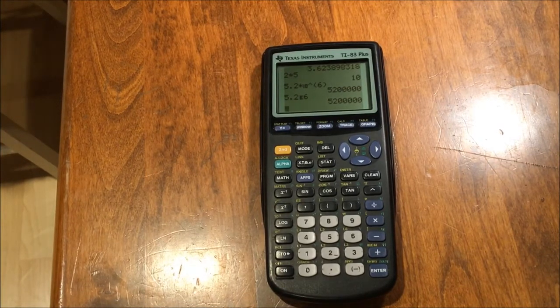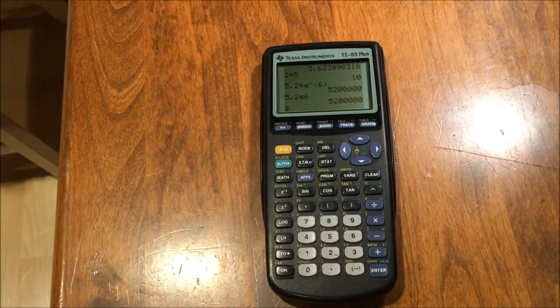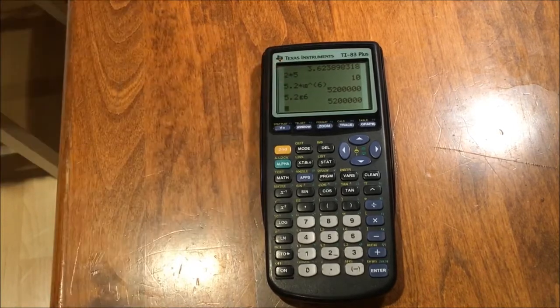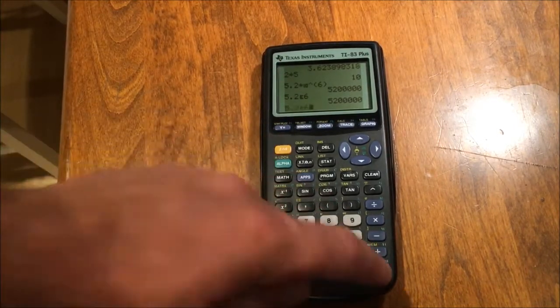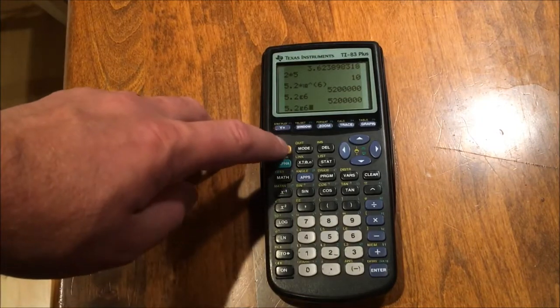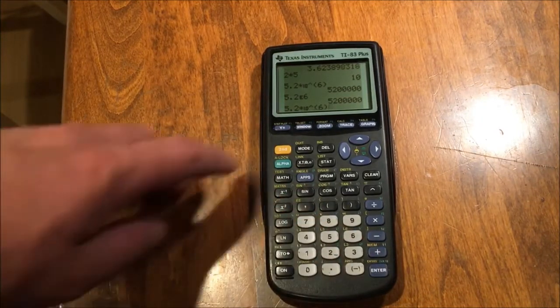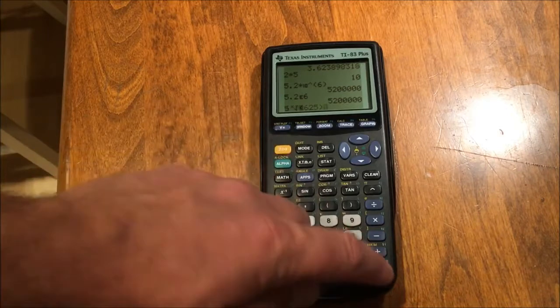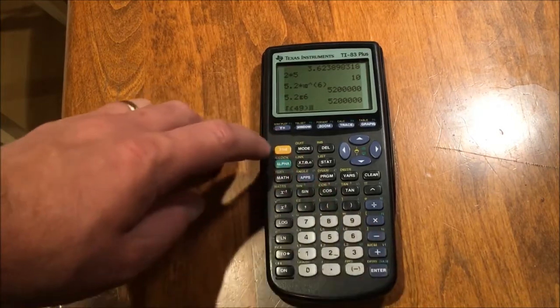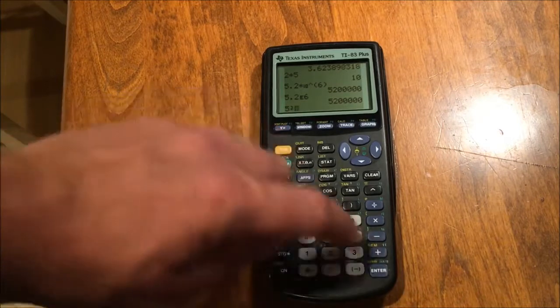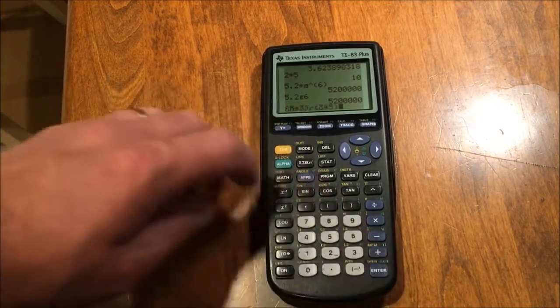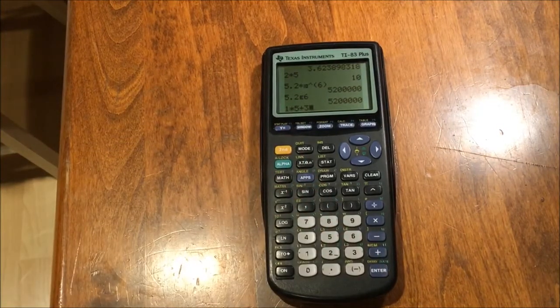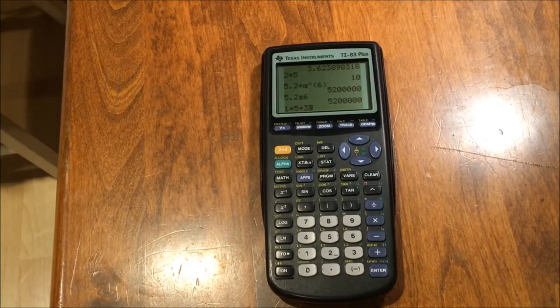I just want to show you one more type of feature, and that is the memory capabilities of this calculator. This calculator is storing a ton of my previous expression evaluations. If I press second entry once, I will get the previous one. If I press second enter again, I will get the one before that. If I press second enter a third time, I get the one before that. I can go back very far, all the way back really to the beginning of this tutorial. All of my expressions have been saved in this calculator's memory.